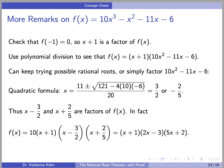Thus, again by the Factor Theorem, x - 3/2 and x + 2/5 are factors of f(x). In fact, noting that our leading coefficient is 10, we can write f(x) = 10(x + 1)(x - 3/2)(x + 2/5). Or if you prefer, you can multiply the 10 through to get f(x) = (x + 1)(2x - 3)(5x + 2).